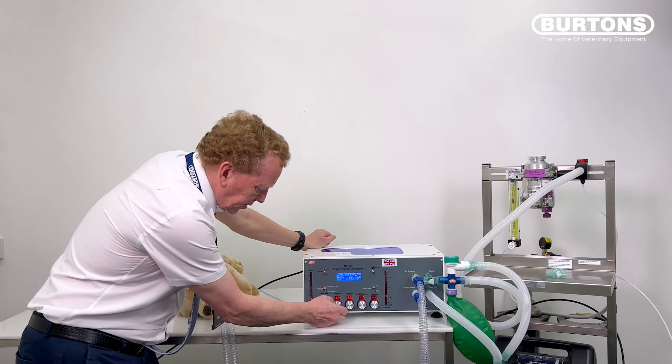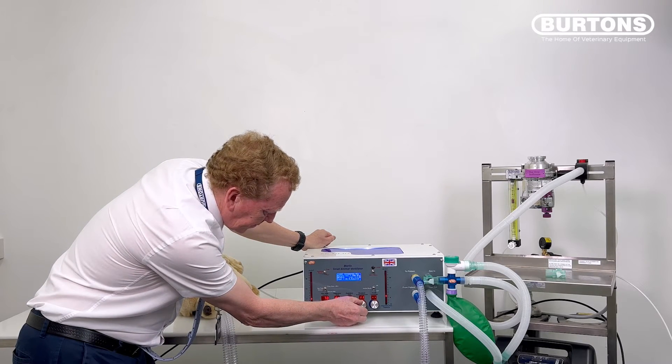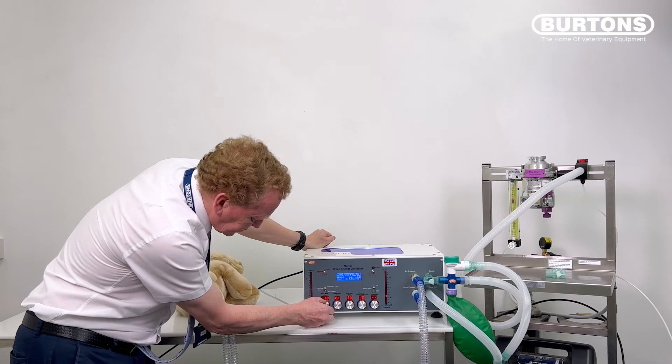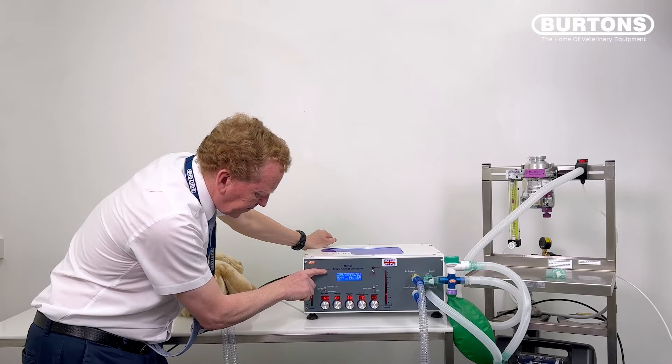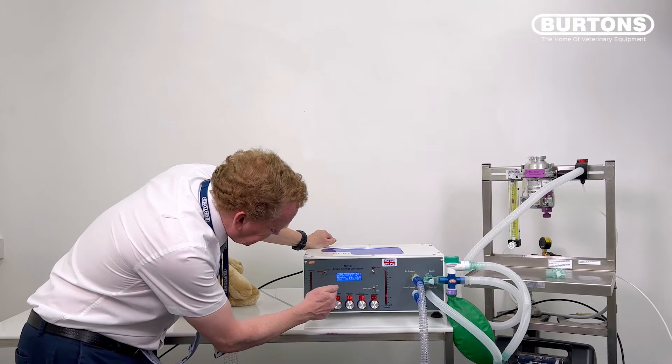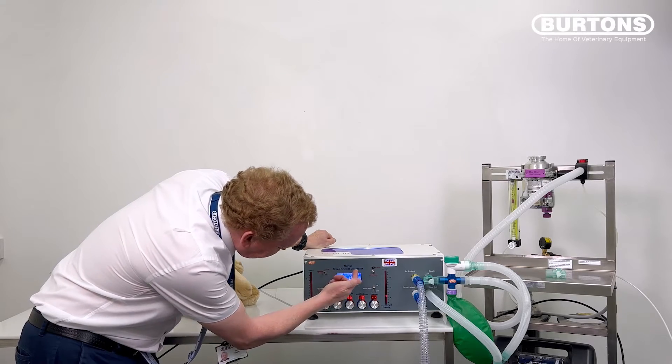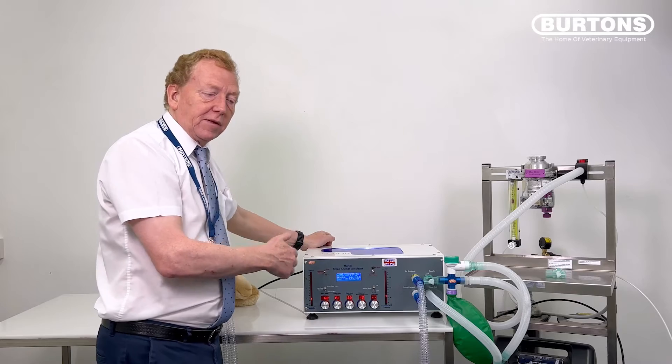So what I would do, I'll go to the pressure cycling mode. I'd set my target pressure to 10. I've got my flow to six as we just discussed. And I'm going to put that to run. Okay, now it's delivering to a pressure of 10 and the delivered volume is 19 mils or so. So we're basically doing exactly the same thing. That's pressure cycling.